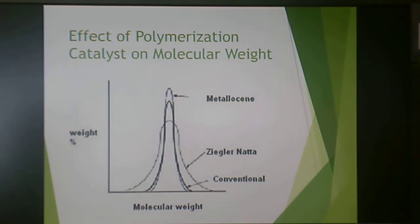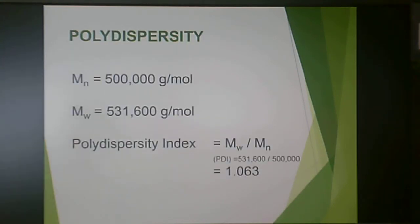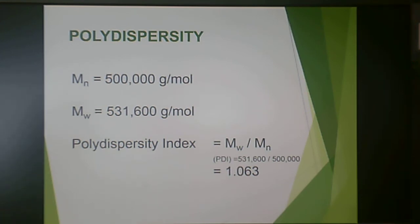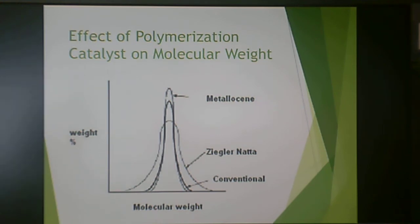Molecular weight distribution and polydispersity index also come into play with different grades of plastic formulations. For injection molding, the polydispersity index is often narrower, while for blow molding it is often wider. In extrusion blow molding, you want the parison to hold together and have form, which requires a wide variety of molecular sizes. For injection molding, you want the material to melt at relatively the same temperature so it's all liquid when you inject. PDI can be made wider or narrower for the same material through different catalysis or different stages of polymerization.